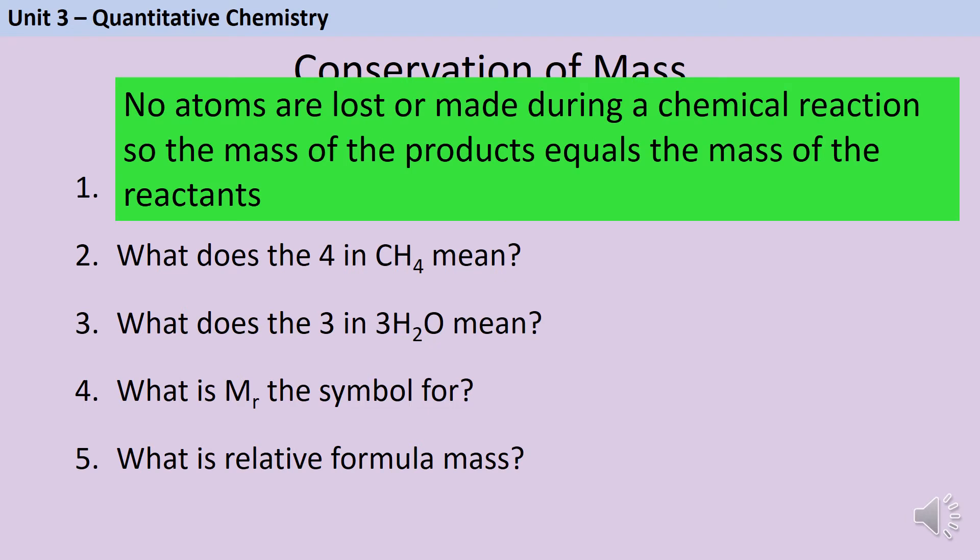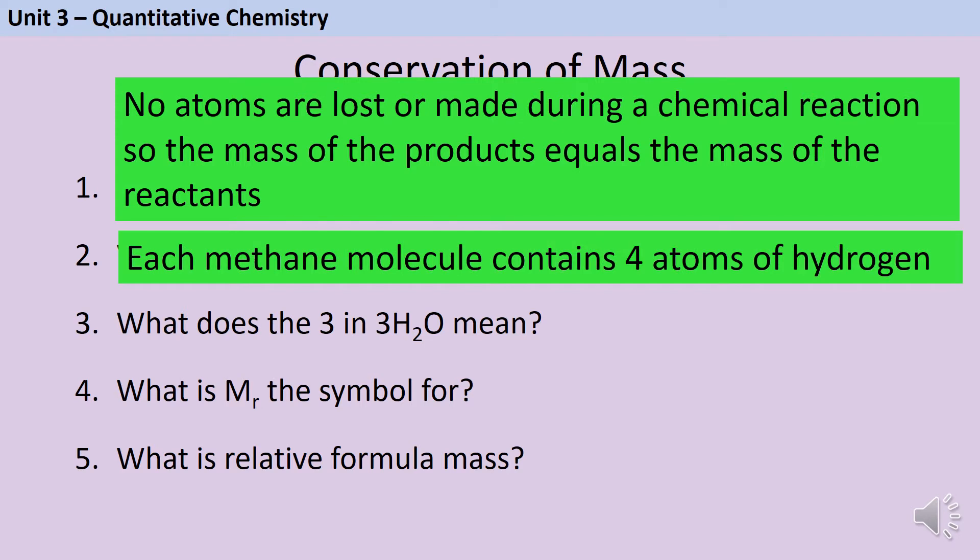When we're balancing those symbol equations, we need to use chemical symbol formulae, and the small subscript numbers in these formulae tell us about the number of atoms that are in a particular molecule or substance. So here in this methane molecule, the small four tells us that each molecule contains four atoms of hydrogen.